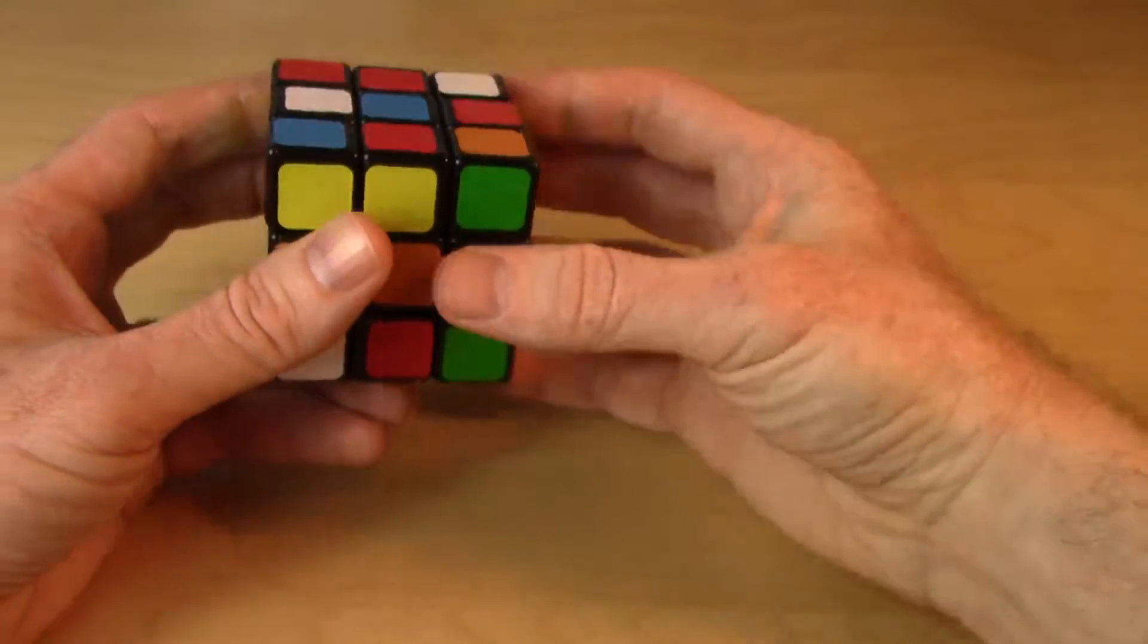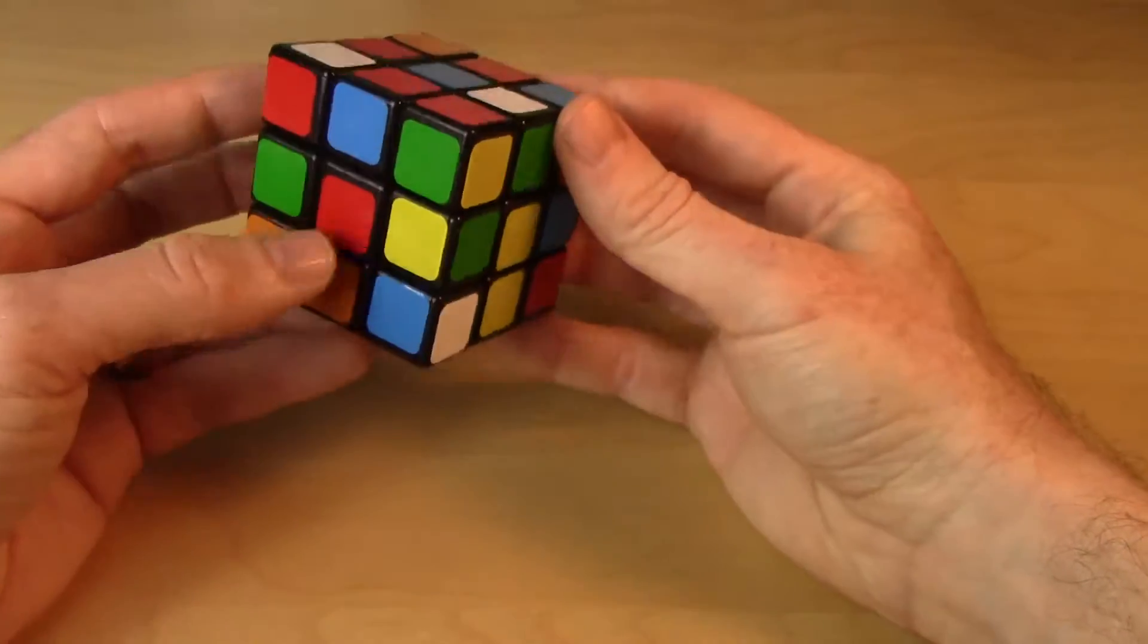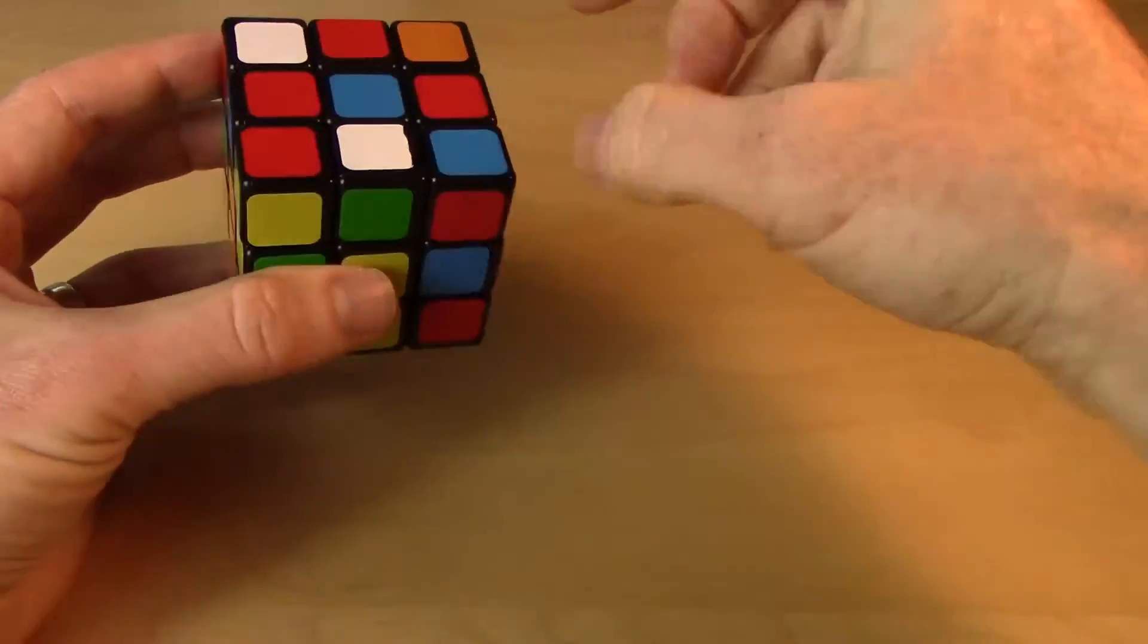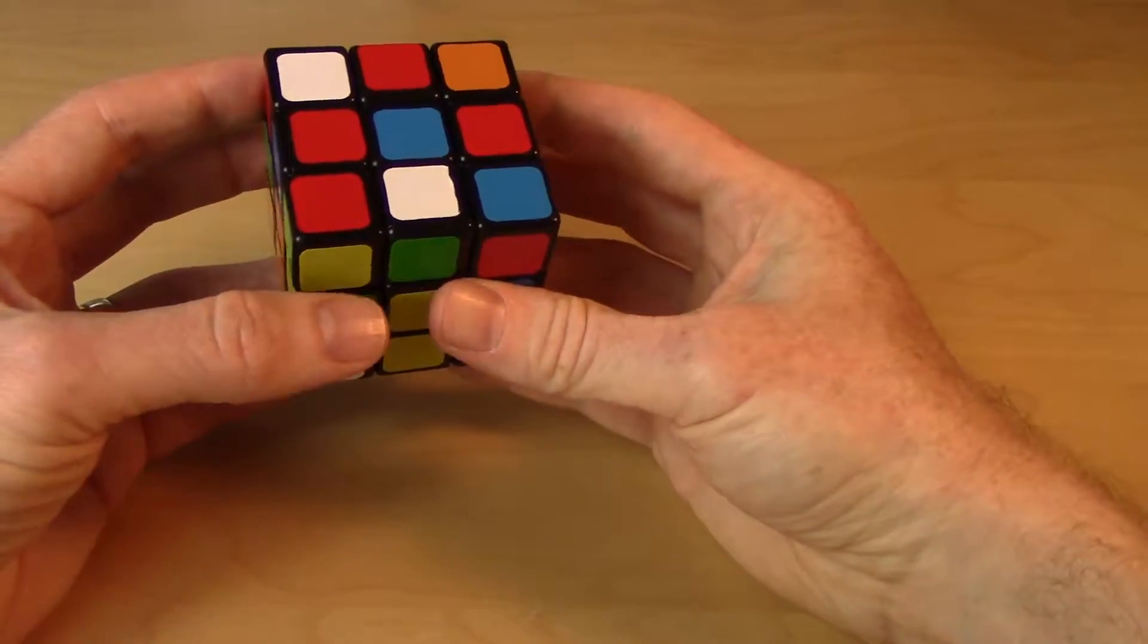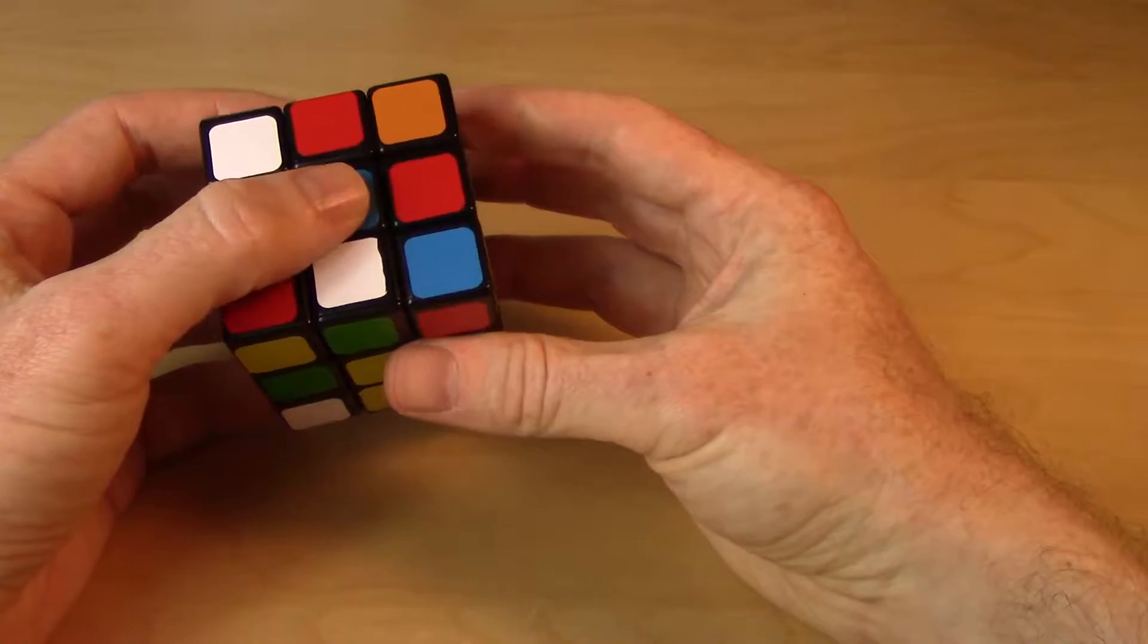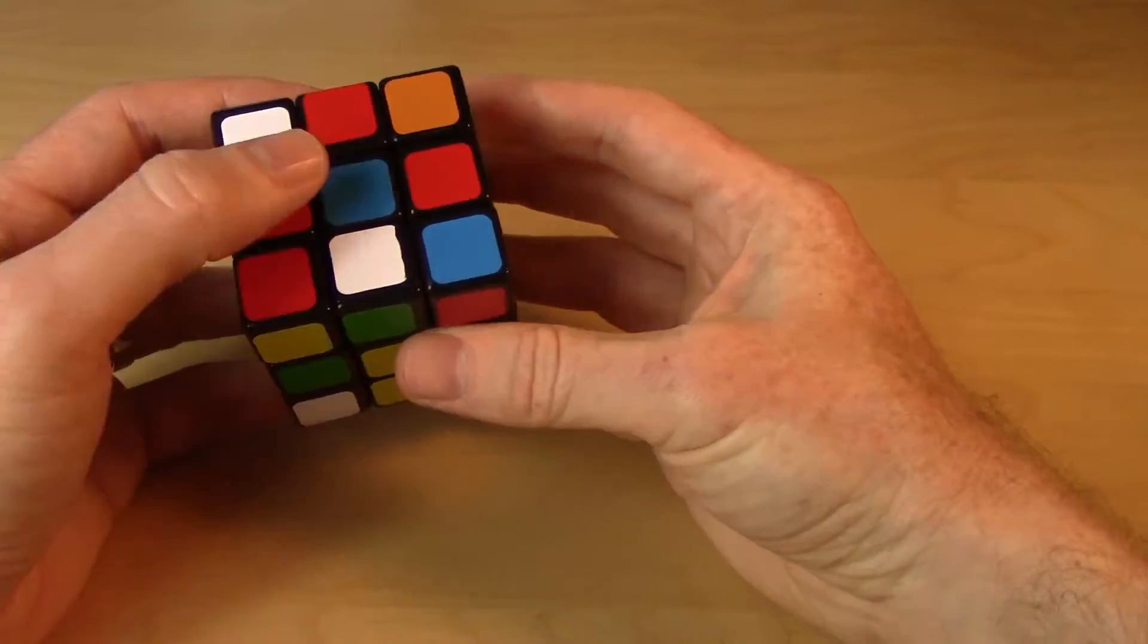Alright, so let's get to it. What we're going to do is scan around the puzzle, try to find an edge piece that has a blue sticker on it and depending what the other color is, try to get it in its right spot.